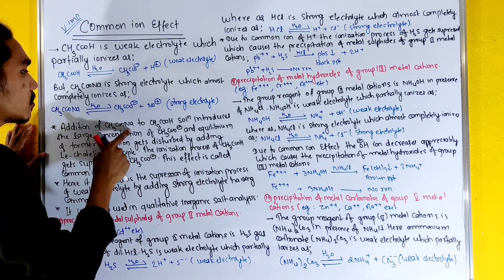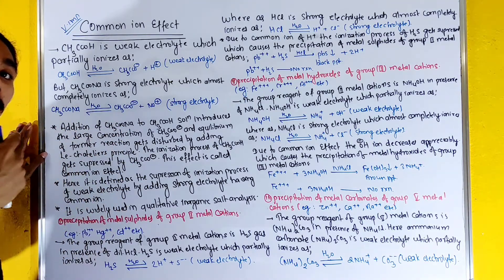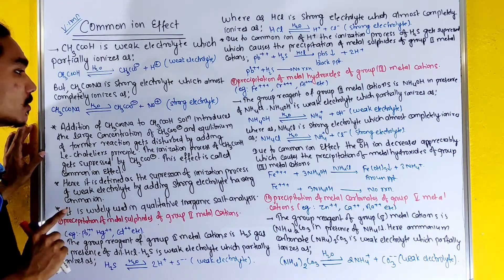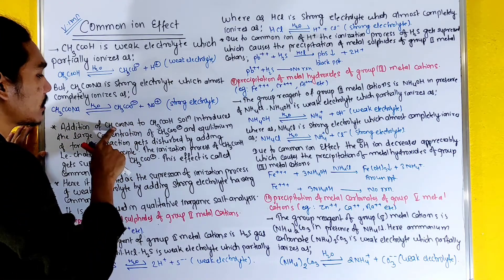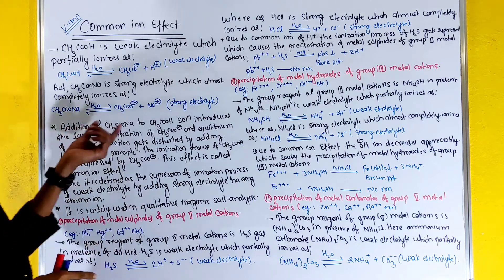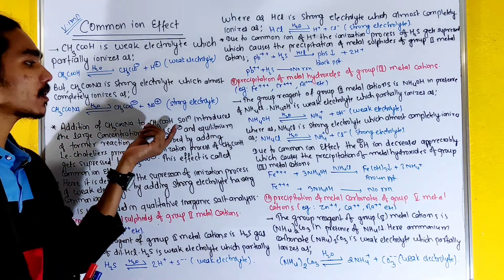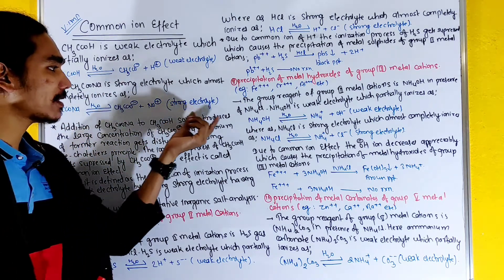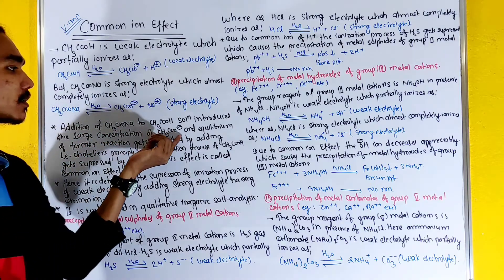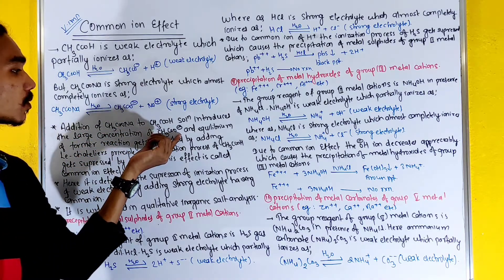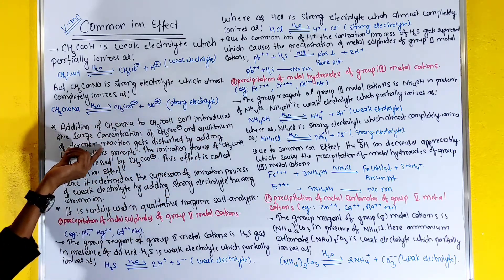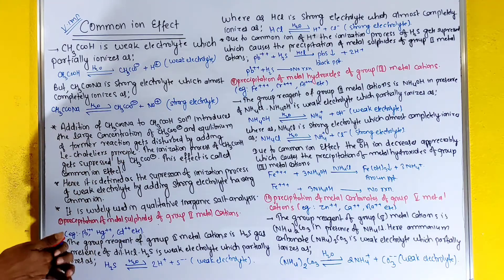The addition of CH₃COONa — a strong electrolyte — is added to CH₃COOH. The solution introduces a large concentration of CH₃COO⁻ ions, and the equilibrium of the former reaction gets disturbed.